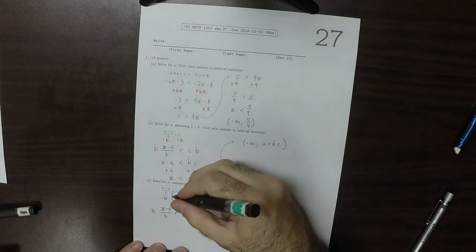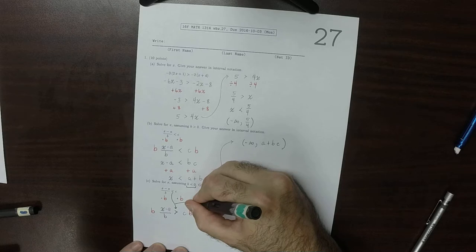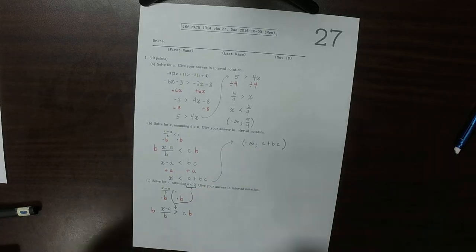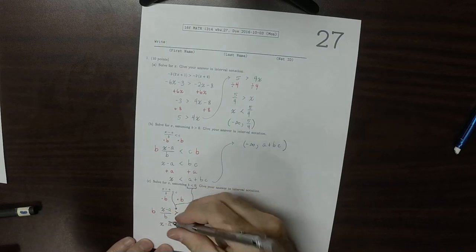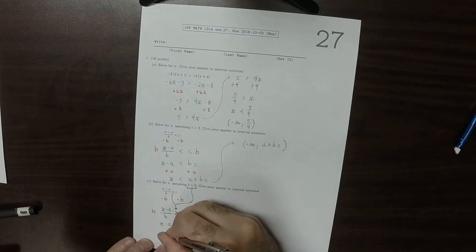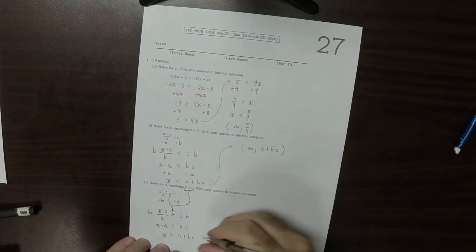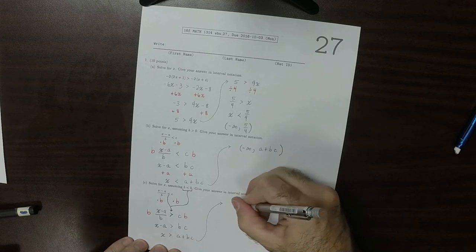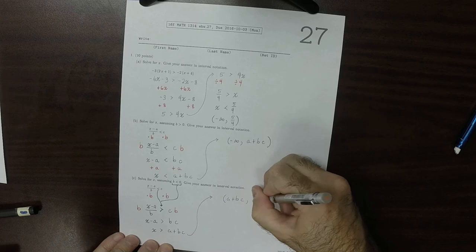So this has occurred right here, because b is negative. Okay, but otherwise, it's very similar to part b. So x minus a greater than bc. So x greater than a plus bc. And therefore, the answer is a plus bc to infinity.